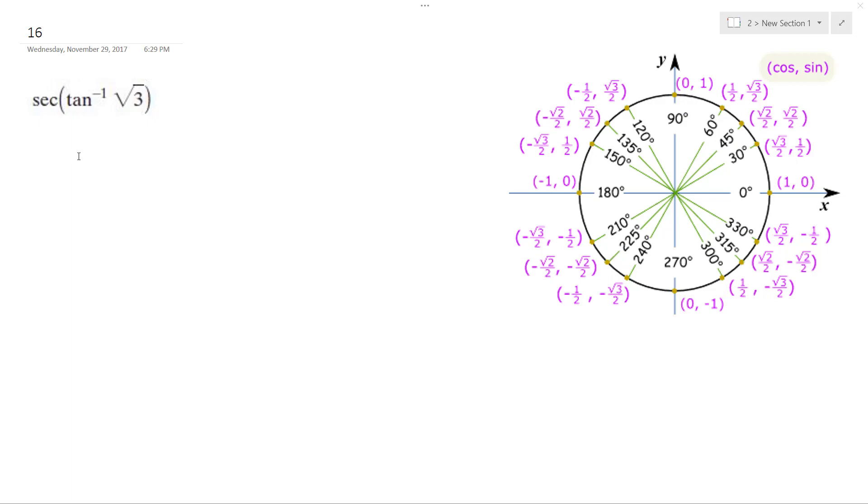Alright, so I got the secant of the inverse tangent of square root of 3 over 1. The inverse tangent is bound between negative pi over 2 and pi over 2, and since it's positive it's going to be in quadrant 1.